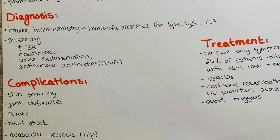Solely the presence of the facial rash is not enough for a precise diagnosis. Immunohistochemical methods like immunofluorescence can help to prove the presence of increased numbers of IgM, IgG, and complement protein C3, which is an indicator for systemic lupus. Also, blood screening can be done, in which typically increased erythrocyte sedimentation rate as well as altered creatinine, urine sedimentation, and increased numbers of antinuclear antibodies, abbreviated ANAs, can be found.